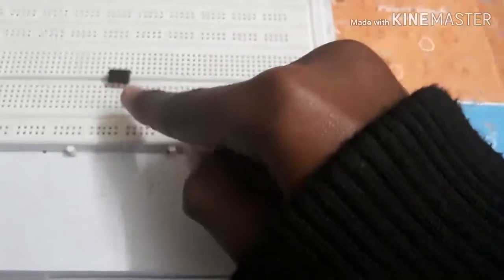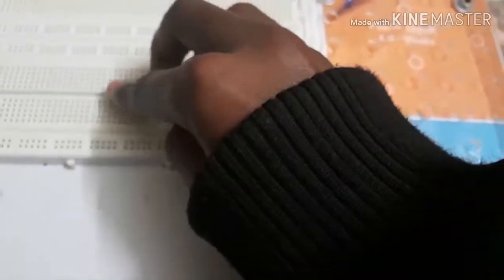There's a small hole on the left side. That's the notch. Okay, place it. Now that's the first pin. First pin. That's the negative rail. Breadboard's negative rail.